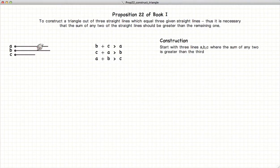So here we go. Let's start with lines A, B, and C, where B plus C is greater than A, C plus A is greater than B, and A plus B is greater than C. This is a requirement before we can actually draw a triangle out of these three straight lines.